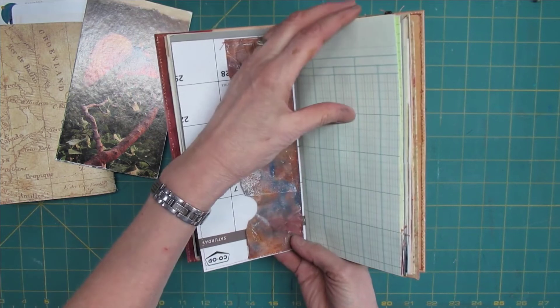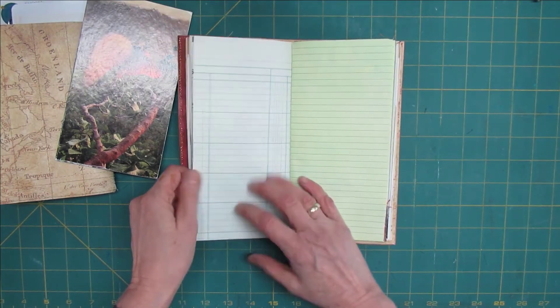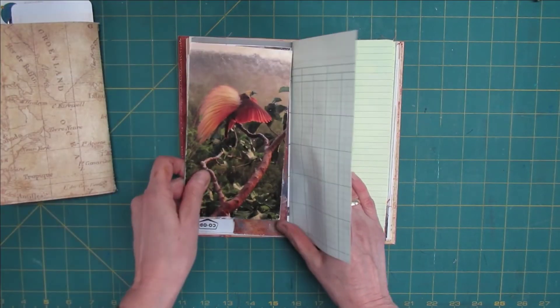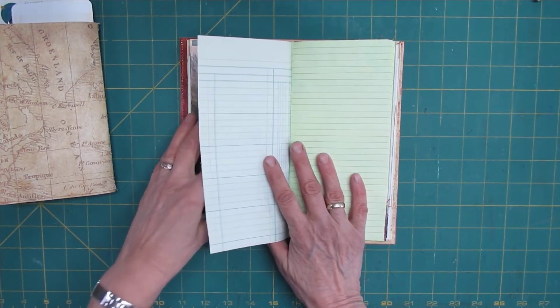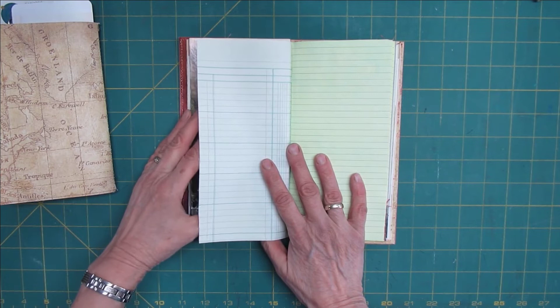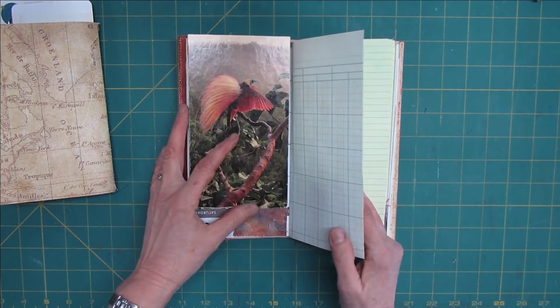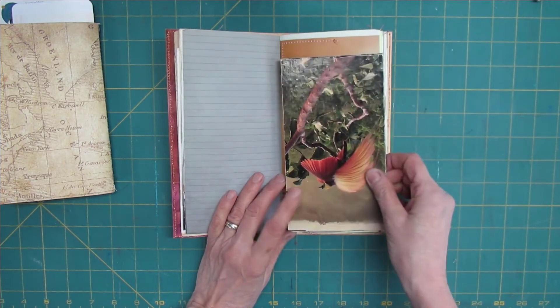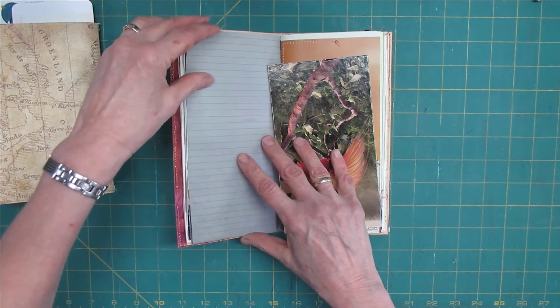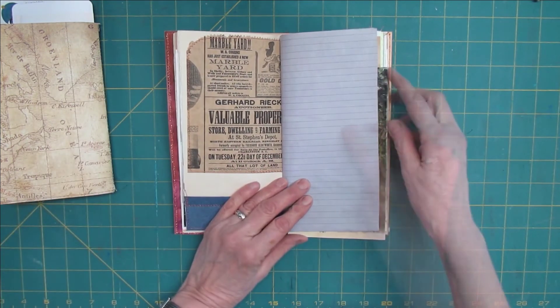So that when I want to write on this side, I can put my backboard in, and my backboard protects me from the bumps of the pockets of the previous page. This way the writing will go a lot smoother. The same thing on the other side. I would put the backboard on this side if I want to write on this page.